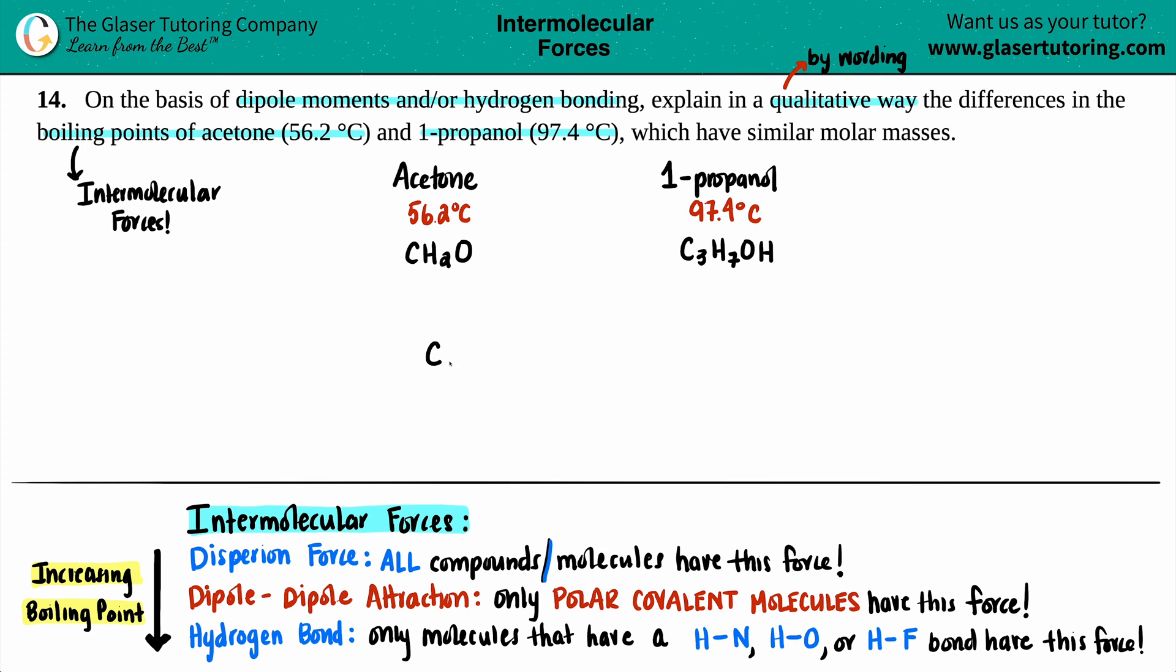So acetone, you have a carbon in the middle, surrounded by one bond to hydrogen, one bond to the other hydrogen, and a double bond to oxygen. And that oxygen has two lone pairs of electrons.